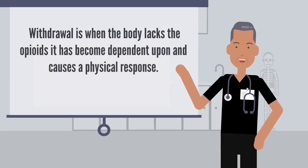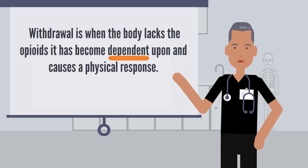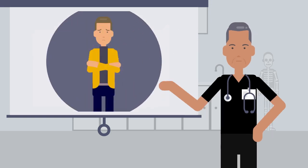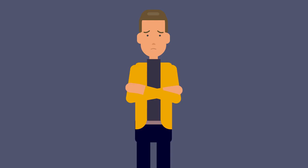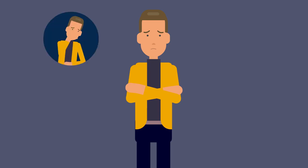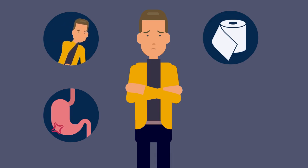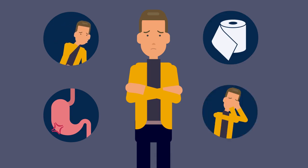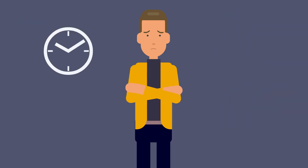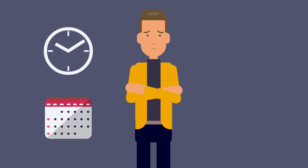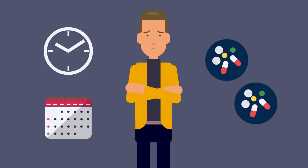Withdrawal is when the body lacks the opioids it has become dependent upon and causes a physical response. Opioid withdrawal is an extremely unpleasant experience that includes nausea, vomiting, stomach cramps, diarrhea, restlessness, anxiety, and depression. Frequency, duration, and amount used all impact the withdrawal experience.